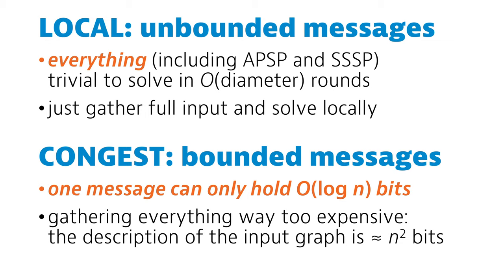This week we are studying a new model, the congest model, which is exactly the same as the local model except for one restriction. Messages have to be small. So we can no longer send messages that contain for example a full description of the entire input graph.